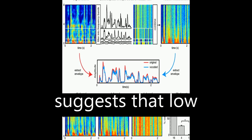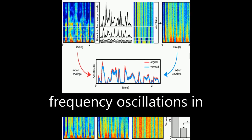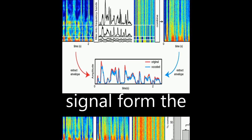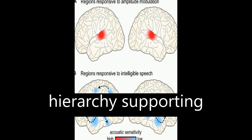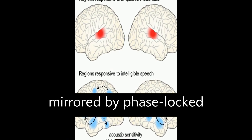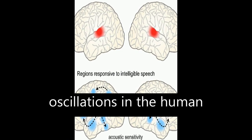Overall, the article suggests that low-frequency oscillations in the acoustic speech signal form the foundation of a rhythmic hierarchy supporting spoken language, mirrored by phase-locked oscillations in the human brain.